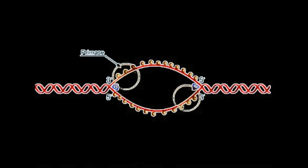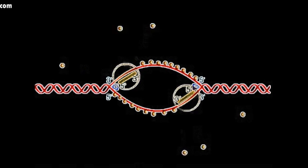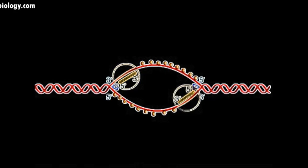Primases enter the replication bubble and add short segments of complementary RNA to the single-stranded region of the template DNA. These RNA primers are anti-parallel to the template strands that they are attached to. Helicase continues to open the double helix and primase follows behind.